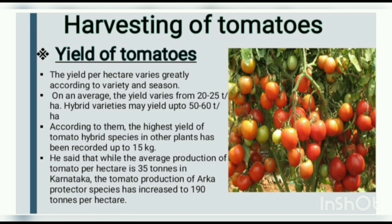Harvesting of tomatoes — yield: the yield per hectare varies greatly according to variety and season. On average, the yield varies from 20 to 25 tons per hectare. Hybrid varieties may yield up to 50 to 60 tons per hectare. The highest yield of tomato hybrid species has been recorded up to 15 kg per plant. While the average production of tomato per hectare is 35 tons in Karnataka, the tomato production of Arka Protector species has increased to 190 tons per hectare.